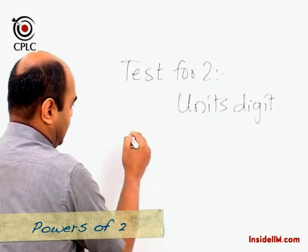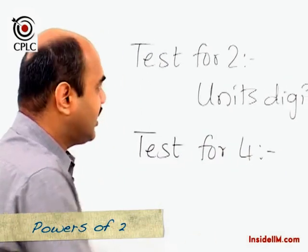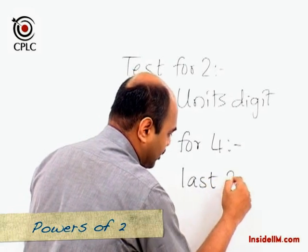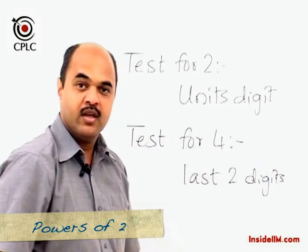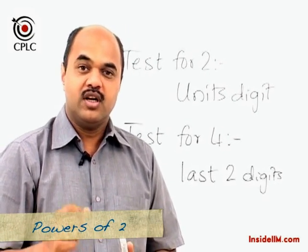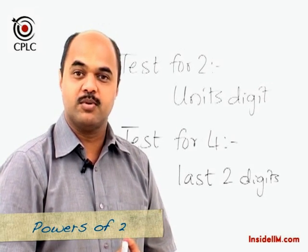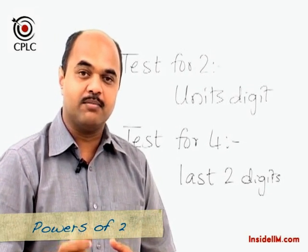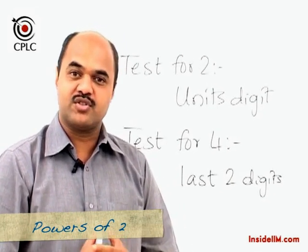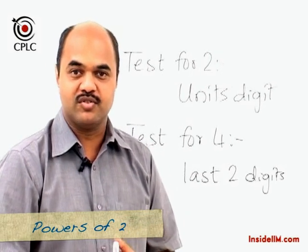Let's move on to another power of two and check the divisibility test for four. If my divisibility test for two was based only on the units digit, my divisibility test for four is based only on the last two digits of the number — take the last two digits, and if the number formed by them is divisible by four, or if the last two digits are 00, then the entire number is divisible by four.